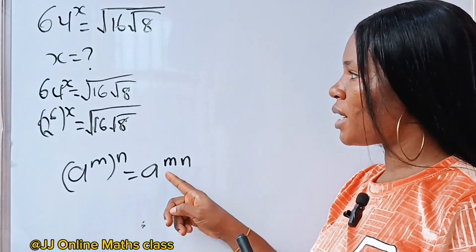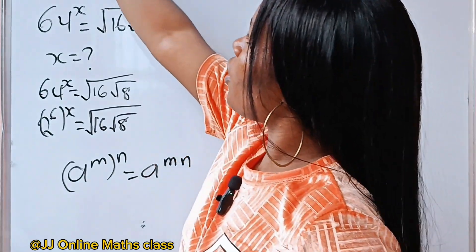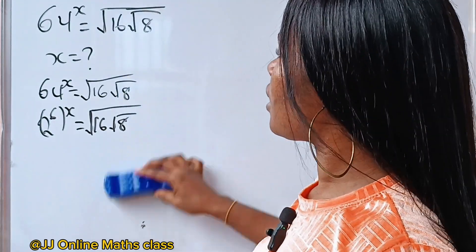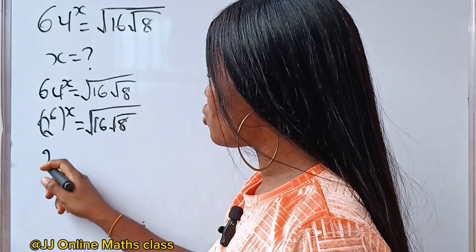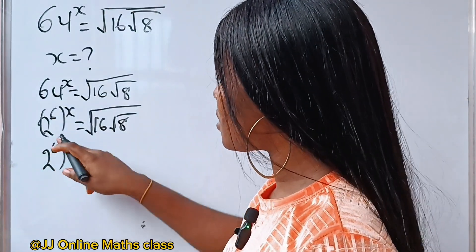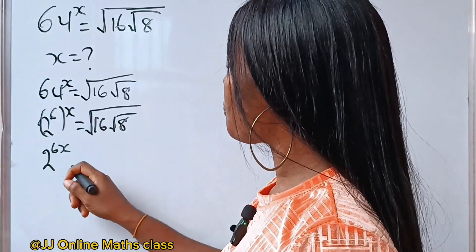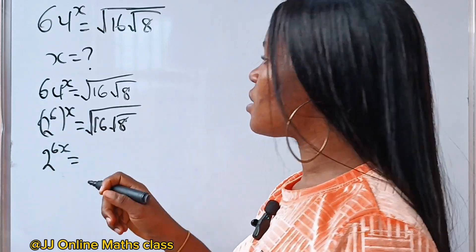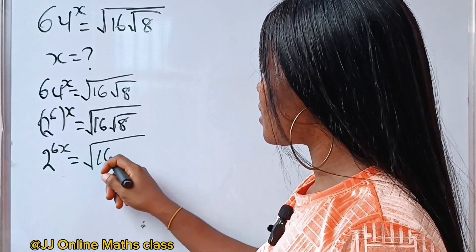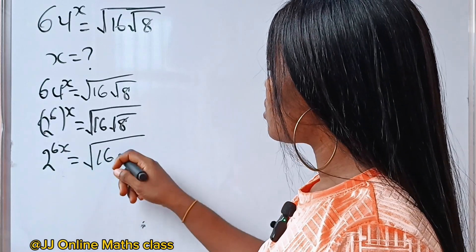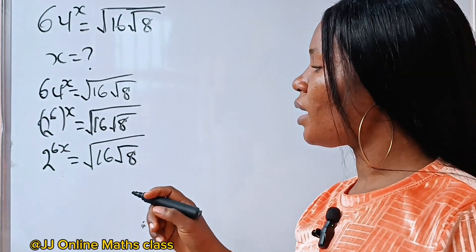That is m times n. We are going to apply that here. That means this can be expressed as 2 to the power of 6x, is equal to square root of 16 root 8.